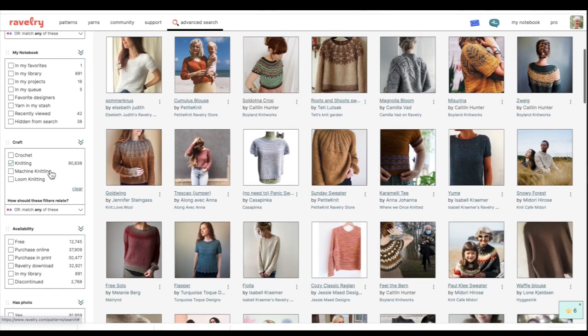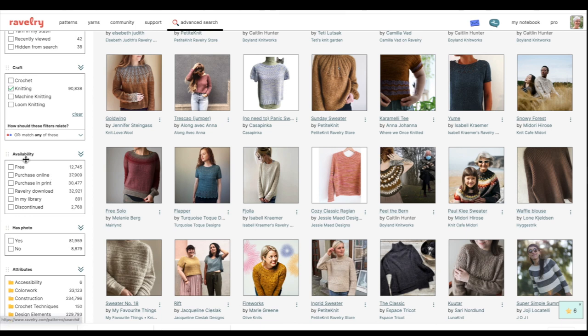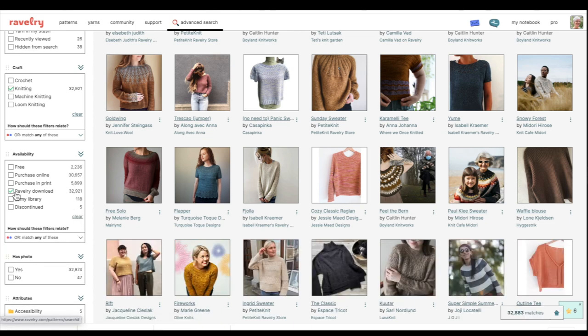Scroll down here a little bit. We can choose availability. So is it a free pattern? It may or may not be available on Ravelry but it will be free and you will be able to see what the source of the pattern is when you look at the pattern page. Let's just limit ourselves to what's available as a Ravelry download. There are patterns available on Ravelry. Some are paid, some are free. So there's 32,000 of them. Some of those are going to be free, some are going to be paid.